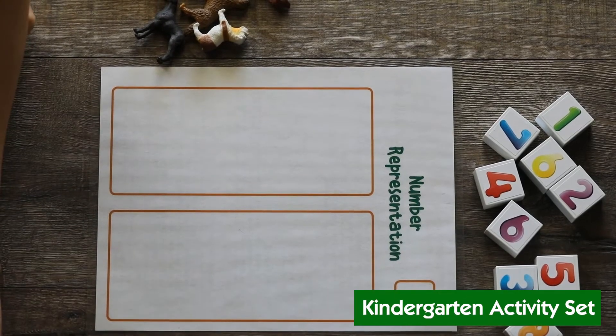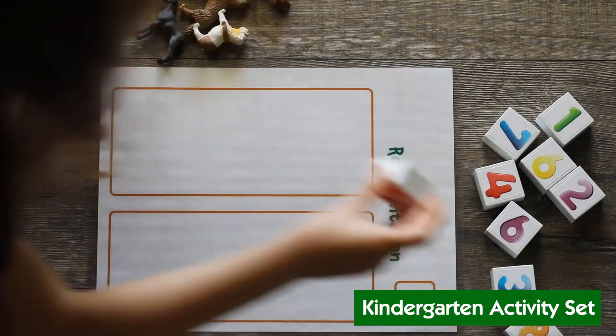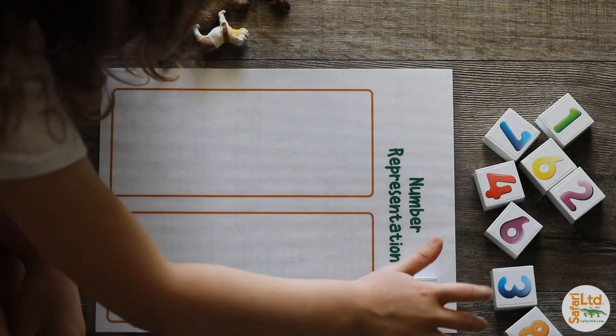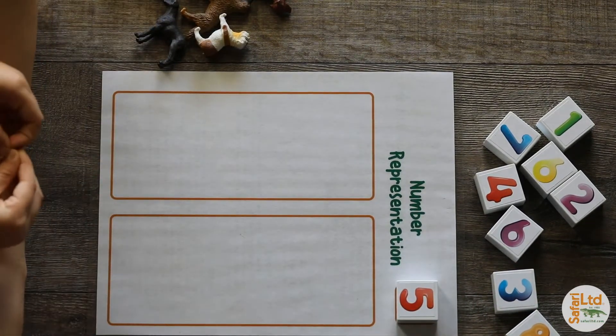Activity four focuses on number representation. Here she's choosing a numbered block and then counting out the amount of dogs and placing them in one of the boxes.